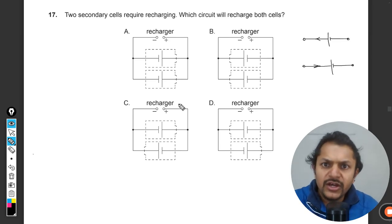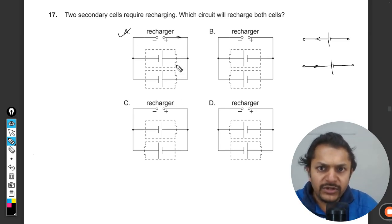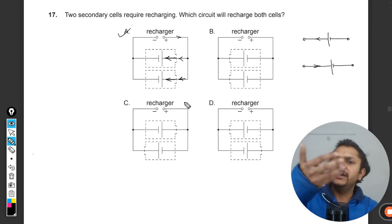So clearly A will be the correct answer. Positive terminal should be connected with the positive terminal of the battery and the current will be entering into it. And that is why we can clearly see that the batteries will be getting recharged.